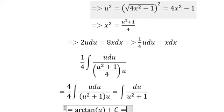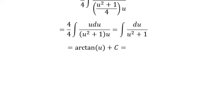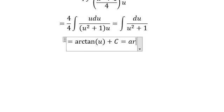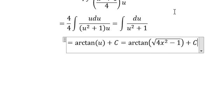We replace u with the square root of 4x² minus 1. This gives us the final answer: arctan of the square root of 4x² minus 1 plus C. That's the end, thank you for watching.